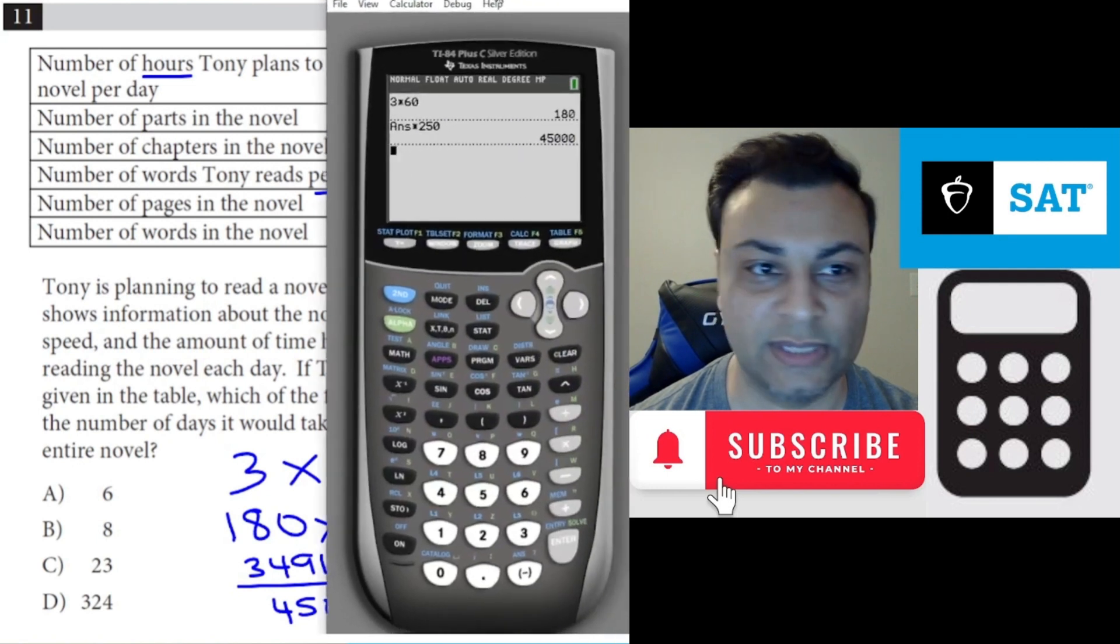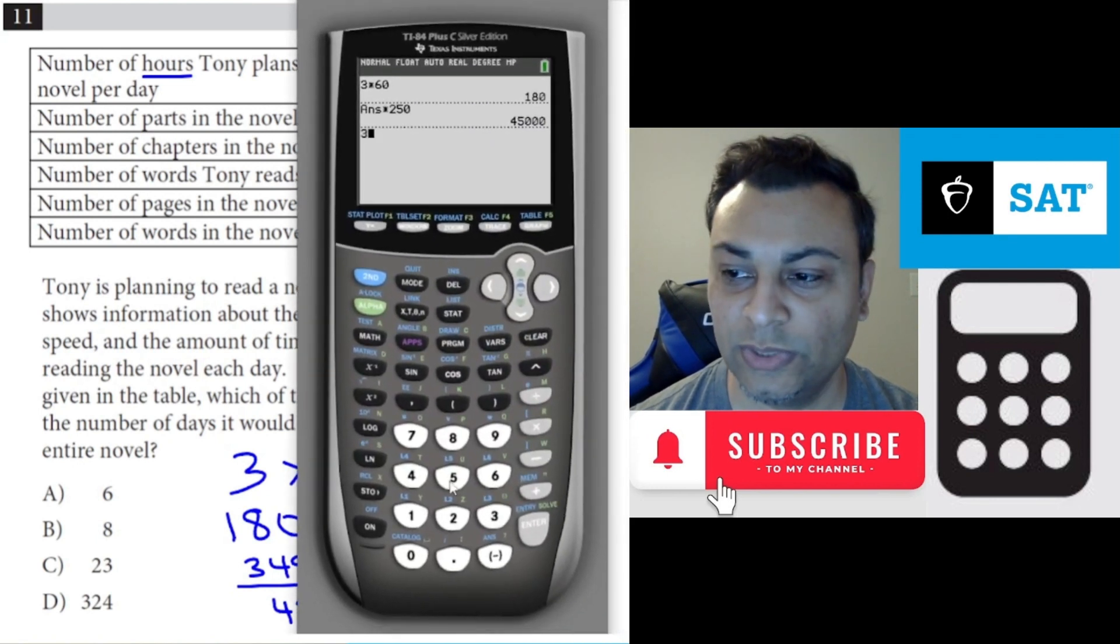Three, four, nine, one, six, eight, three, four, nine, one, six, eight, divided by that number, 45,000.